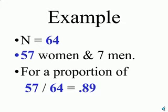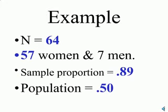So our n, our sample size, is 64. We had 57 women and only 7 men. This gives us a proportion of females in the sample of 57 divided by 64, or 0.89. Now in the population, where half are women, we have a proportion of 0.5 for females.